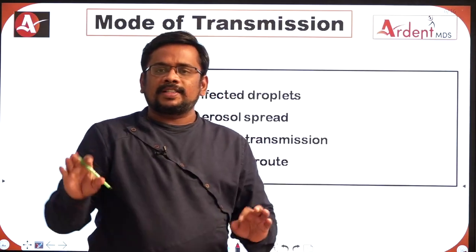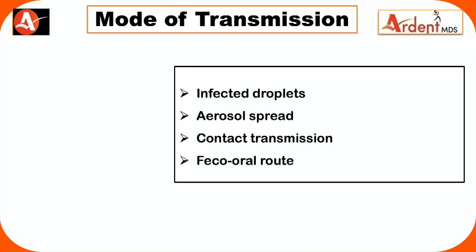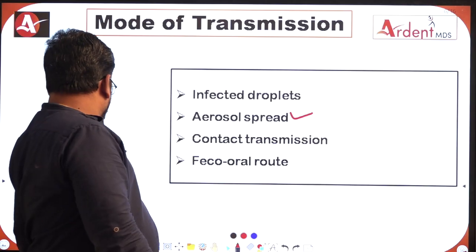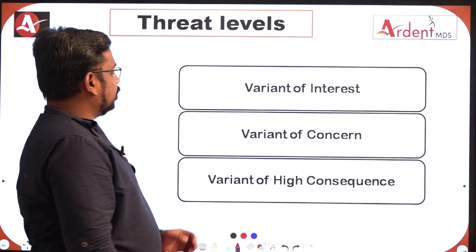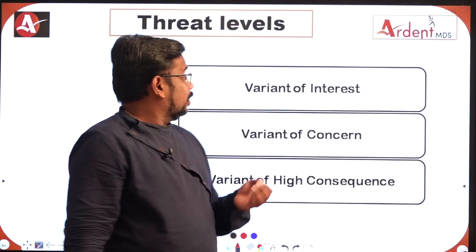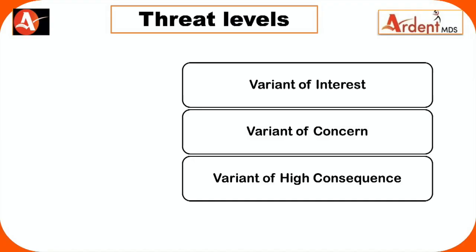Coming to the mode of transmission: it is transmitted through infected droplets, aerosol spread — which is one of the most important routes for dentistry — and contact transmission through fomites, which are inanimate objects. The feco-oral route also transmits coronavirus. Coming to the threat levels: there are three important levels — Variant of Interest, Variant of Concern, and Variant of High Consequence.